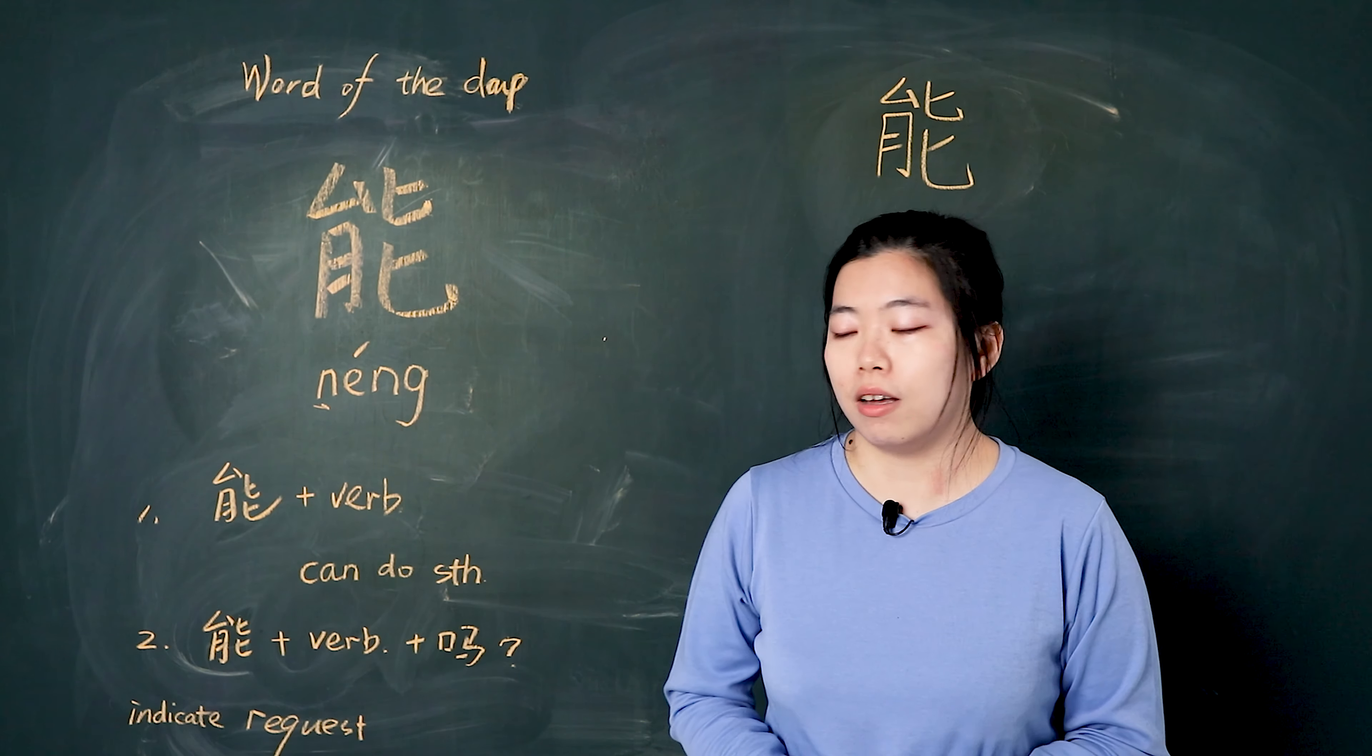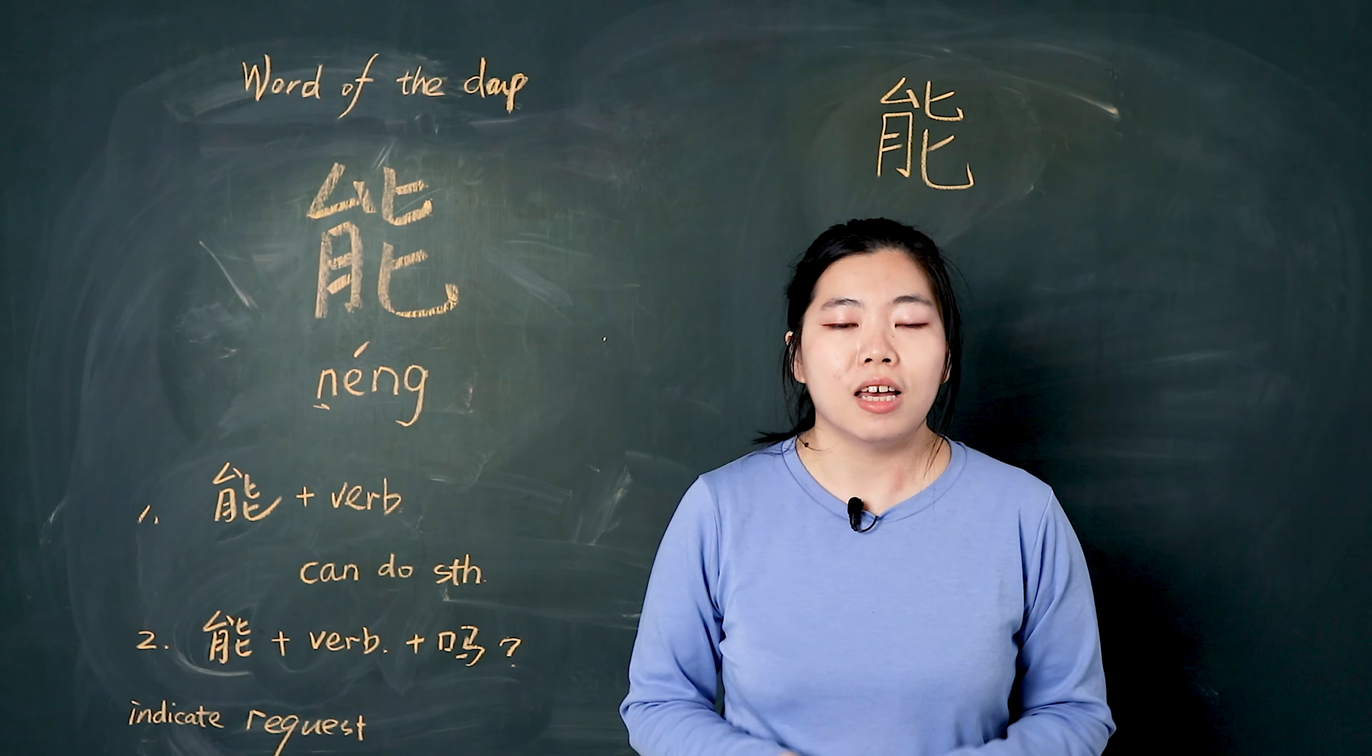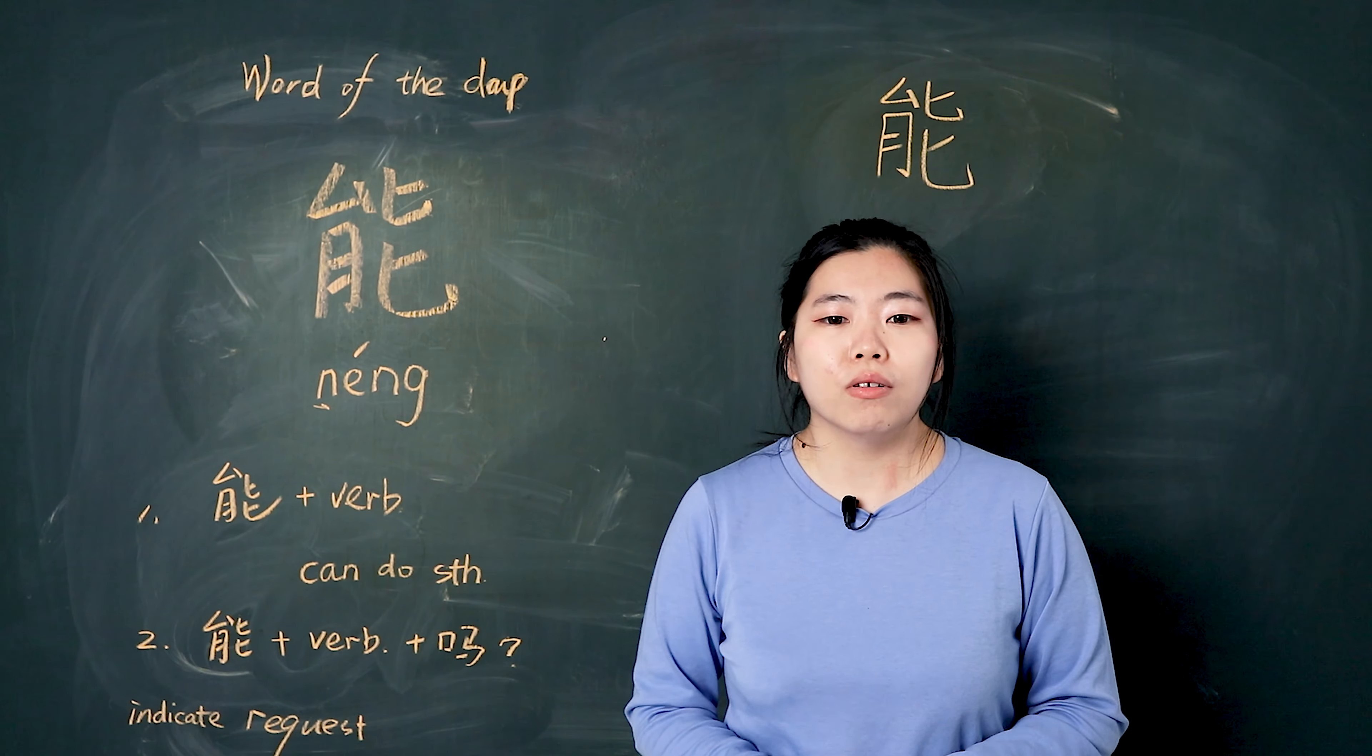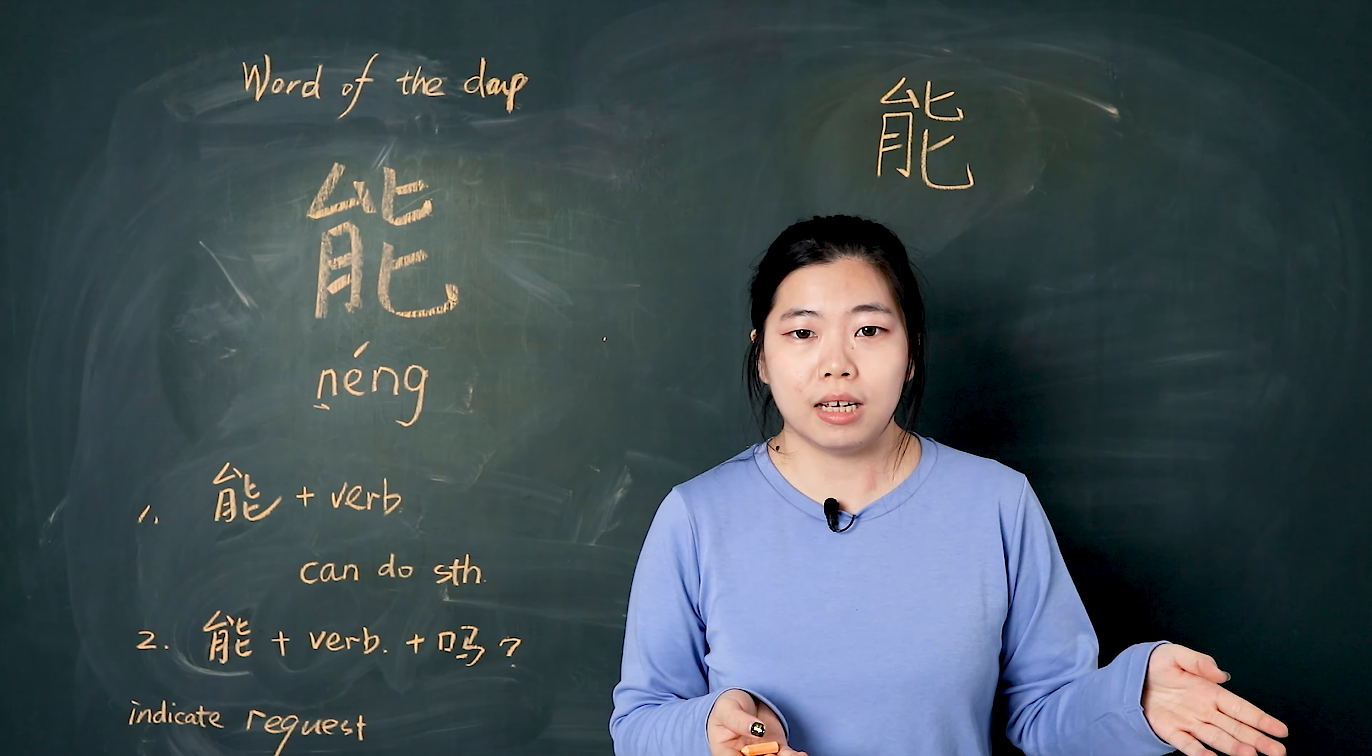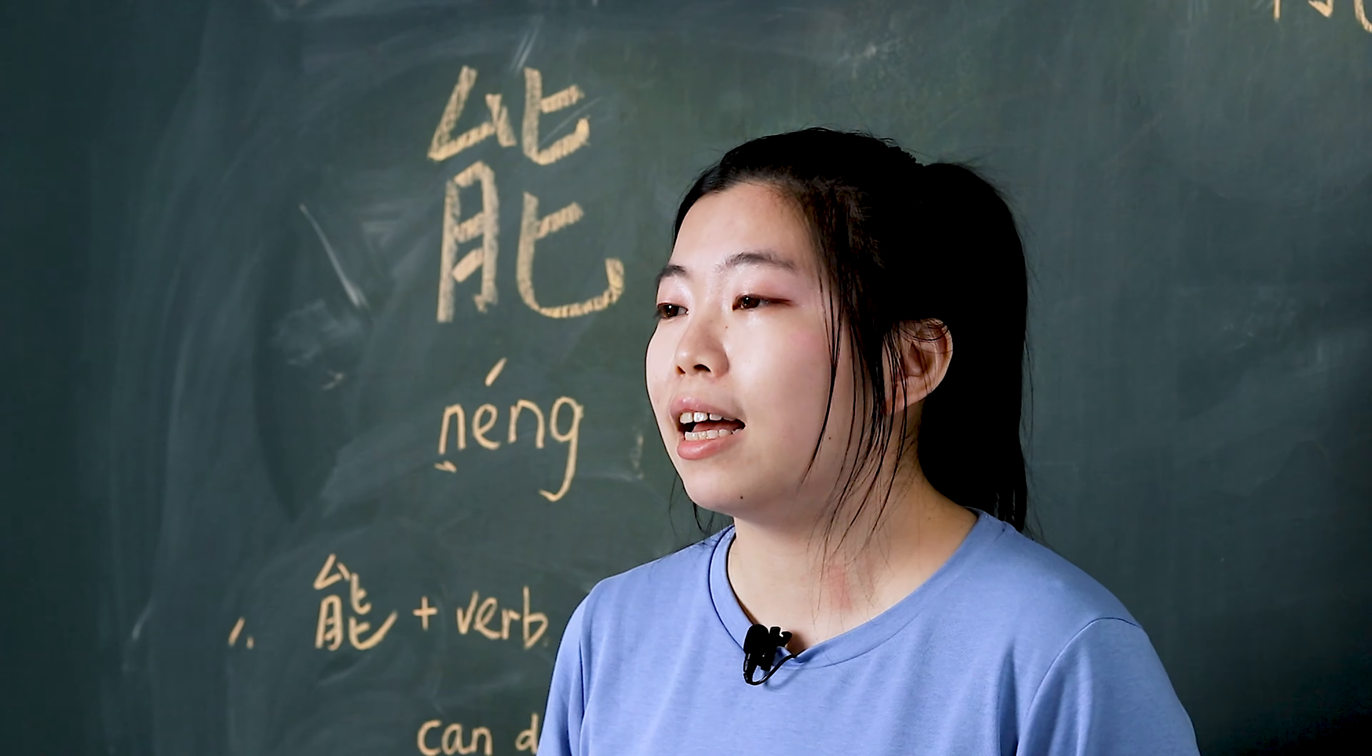The second meaning of 能, we use 能 plus a verb plus a ma. It's a question sentence. It means you ask people for a request. For example, when you eating outside, you want to find a seat, looking for a seat. So you find an empty seat, you will ask, can I sit here? So you can say 我能坐在这里吗?